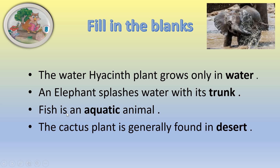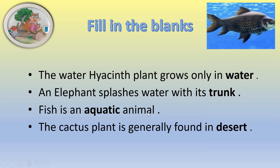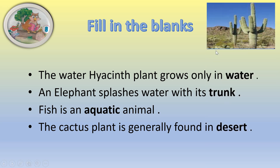Fish is an aquatic animal because it lives in water. The cactus plant is generally found in desert — see here the picture of cactus growing in desert.